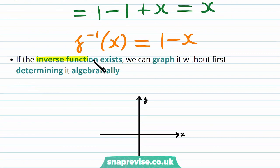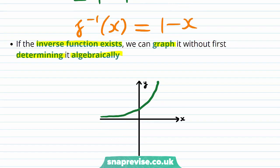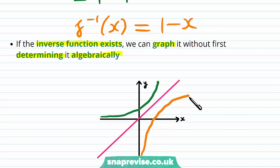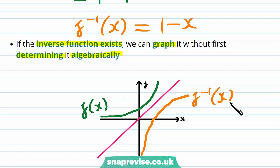If the inverse function exists, we can graph it without first determining it algebraically. Given a function f, we draw the line y equals x on the same axes. By the composition property, f inverse is just the reflection of f of x in the line y equals x. So given f of x we are able to sketch f inverse of x by reflecting it in the line y equals x.